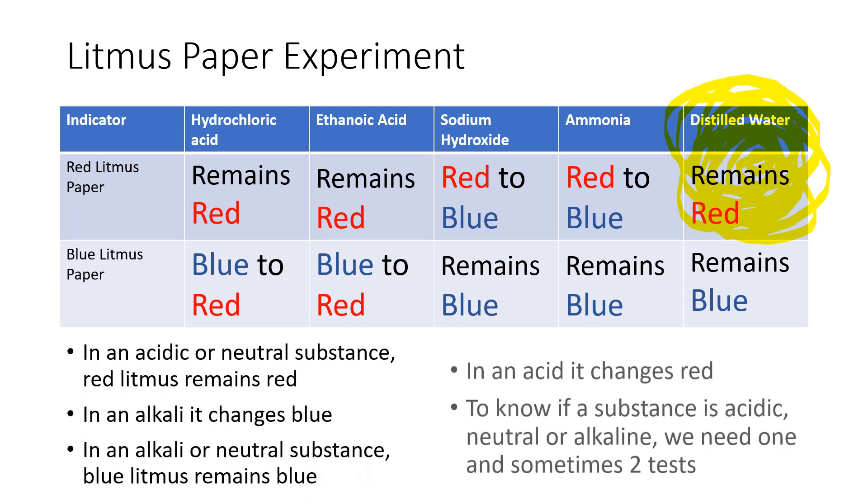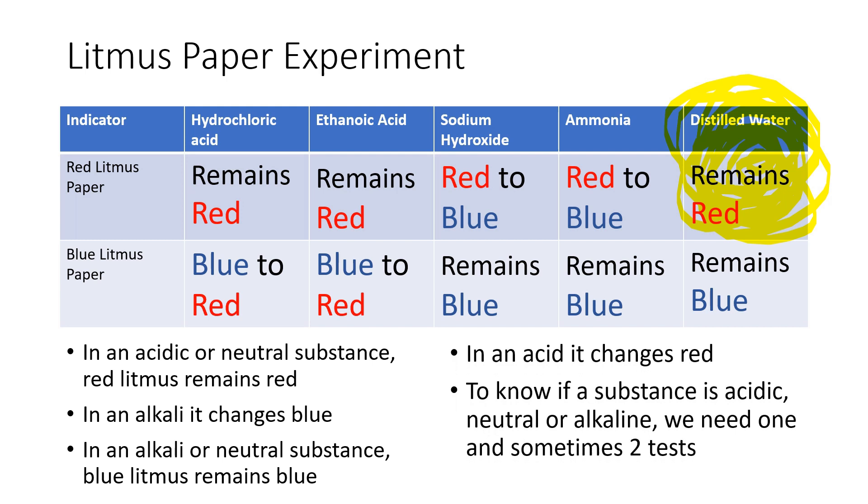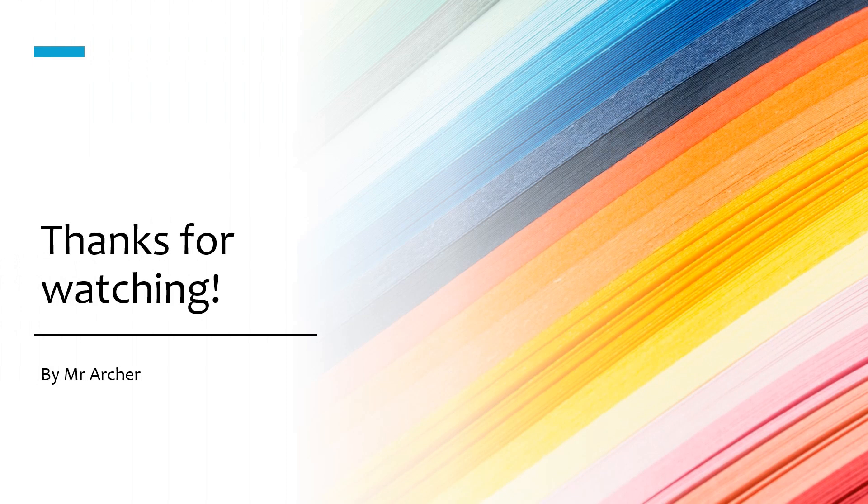So I've just summarized, though, what I've been saying here in a few sentences. And one of the key points I'd like to make is this last point, that to know if a substance is acidic, neutral or alkaline, we need one and sometimes two tests. We need one test if the red litmus paper becomes blue or the blue litmus paper becomes red. And in all of the situations, we need two tests.